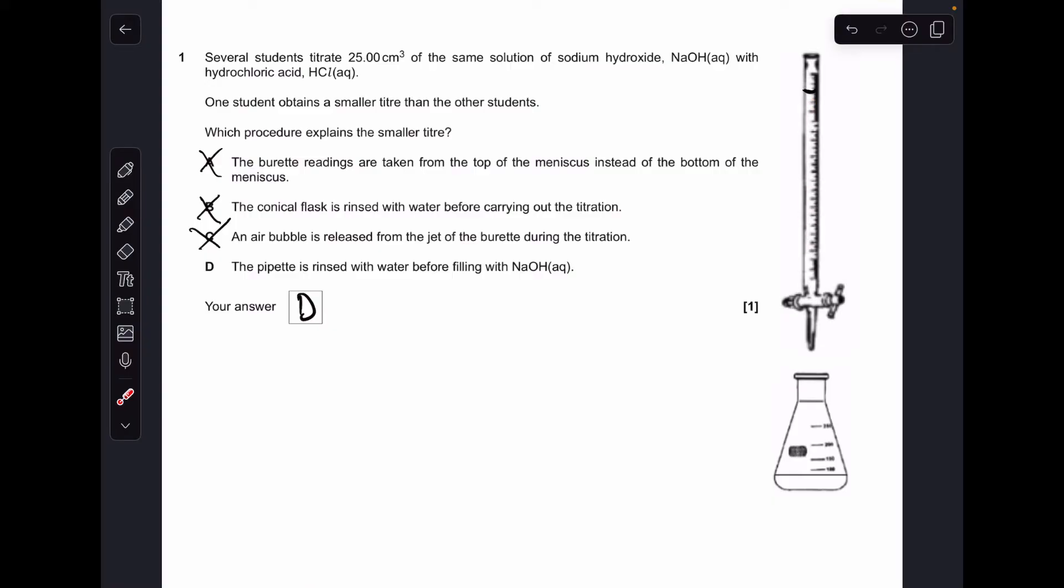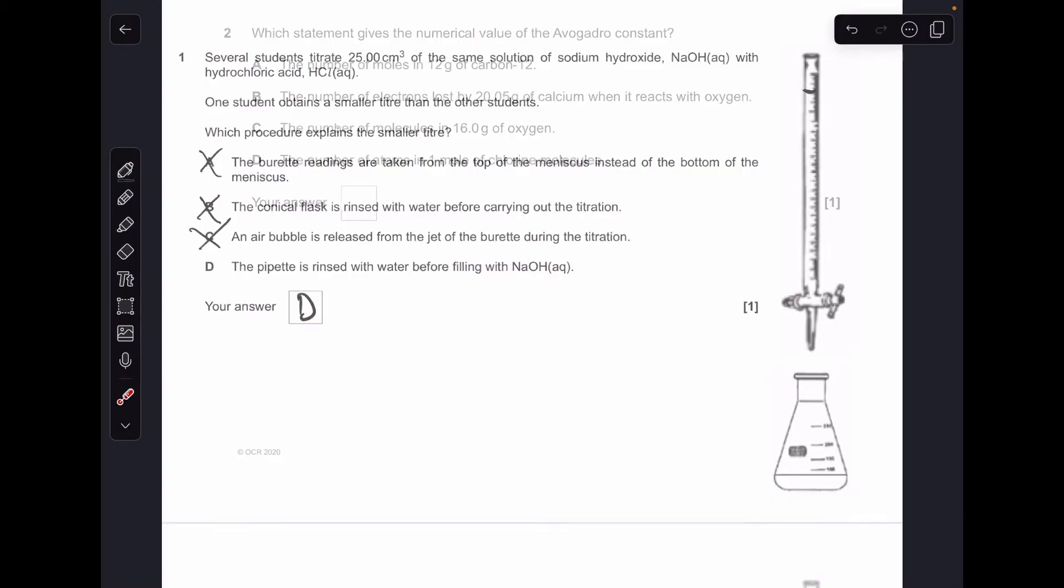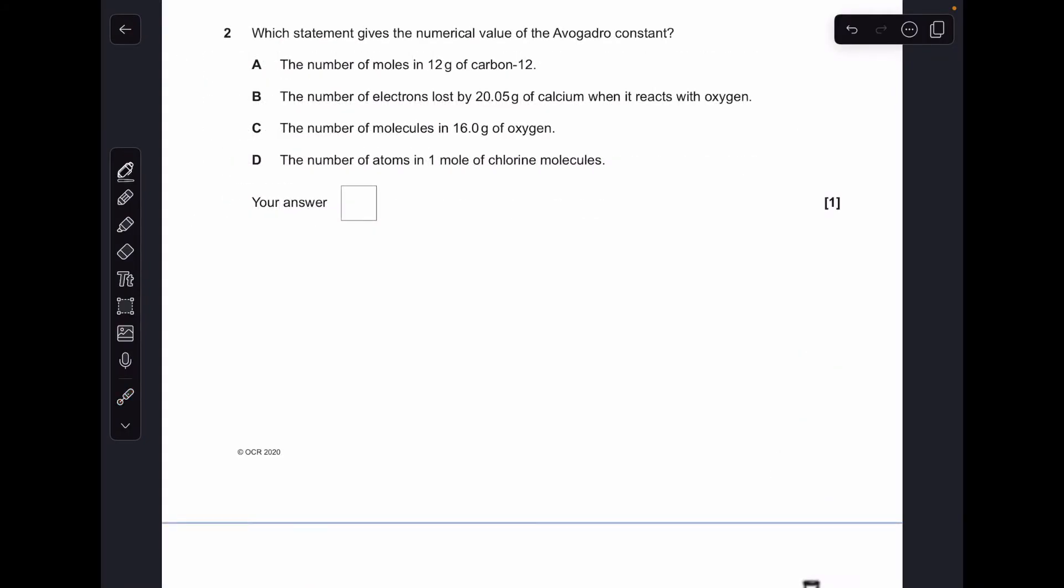Number two, which statement gives a numerical value of the Avogadro's constant? So which one's going to give us an answer of 6.02 times 10 to the 23? Statement A is not right because 12 grams of carbon-12 is one mole, not that many moles.